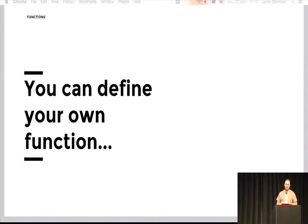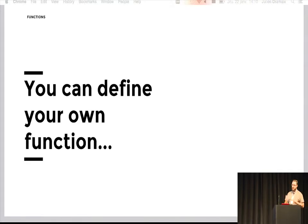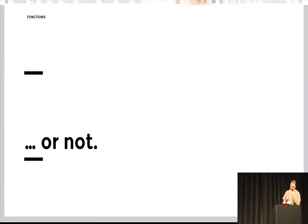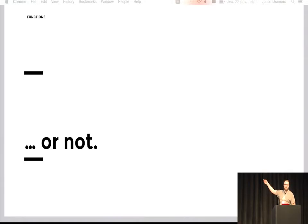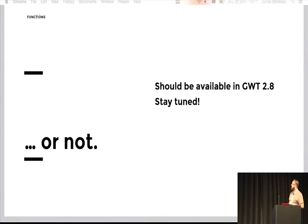Normally in GSS you can create your own custom functions — the implementation is done in Java by defining a class that implements a certain interface. You receive the parameters passed to the function, make the needed computation, and return the resulting CSS. However, in Grid this is not yet possible because there is no way to add your function to the compiler. This feature should be added for Grid 2.8, so stay tuned.